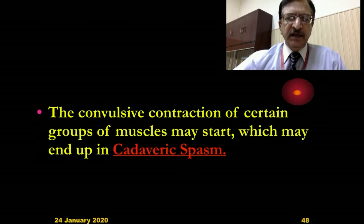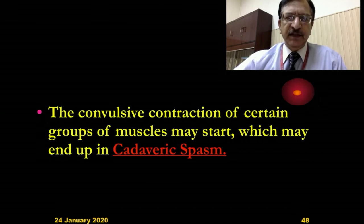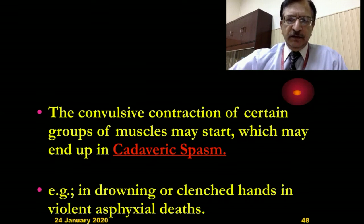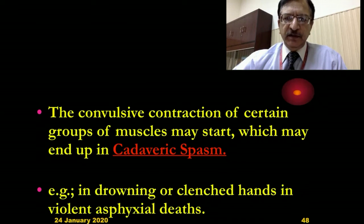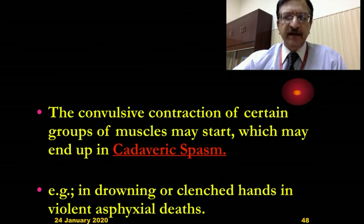Cadaveric spasm is the last volitional activity at the time of death, where certain groups of muscles pass into cadaveric spasm without passing through primary flaccidity. Any sudden, anxious, struggling death can lead to this condition. In drowning, for example, the clenched hands can grasp weeds, sand, or other particles they come in contact with.